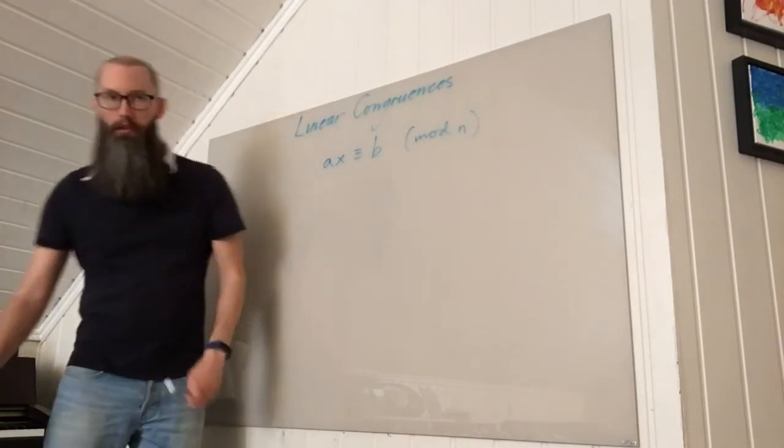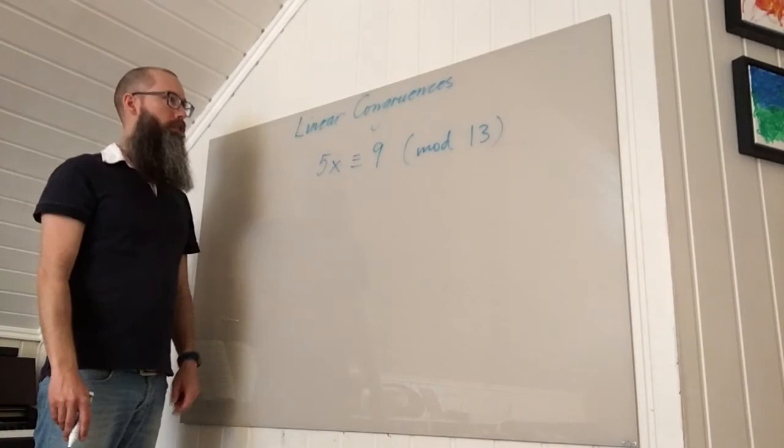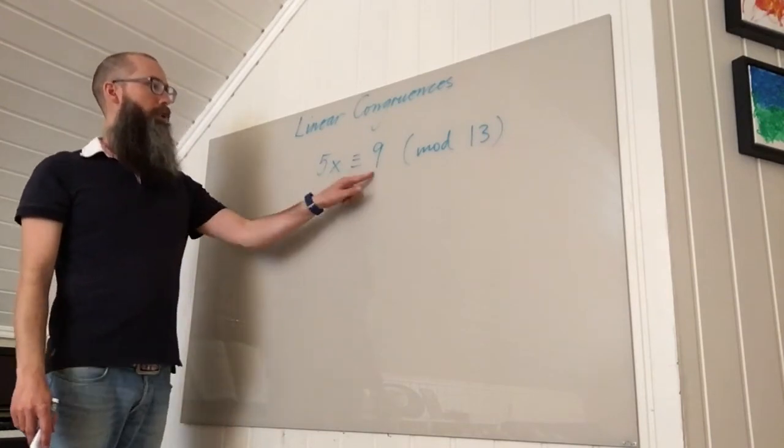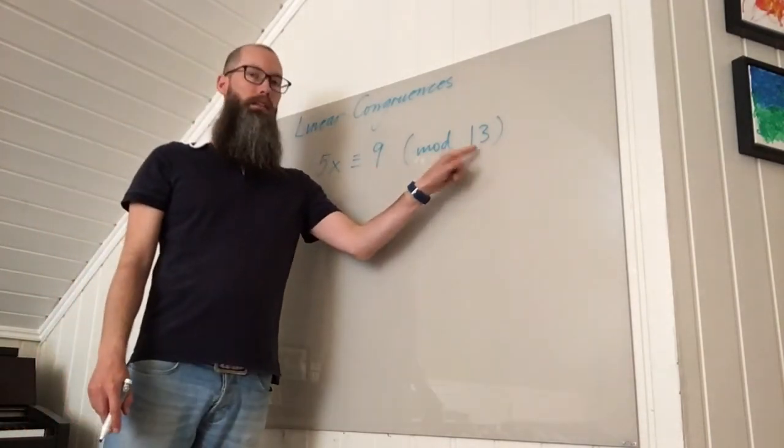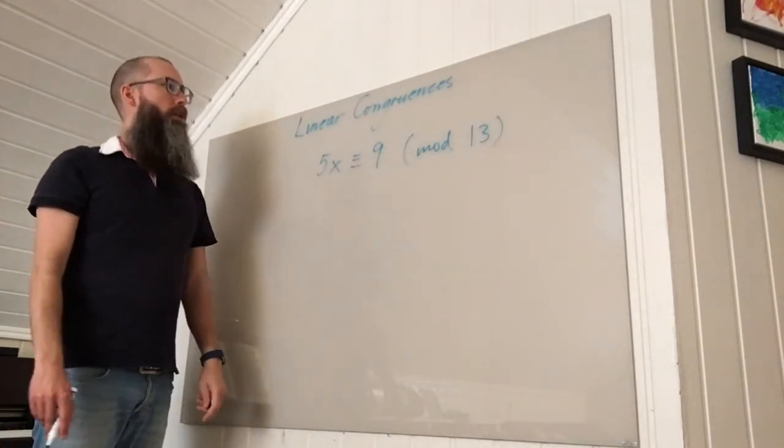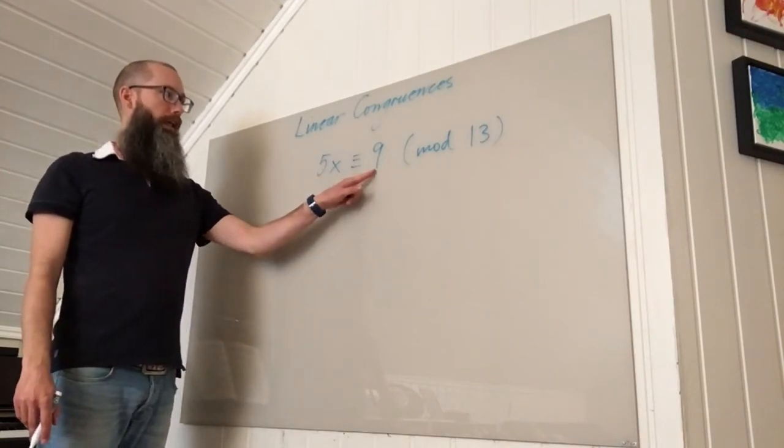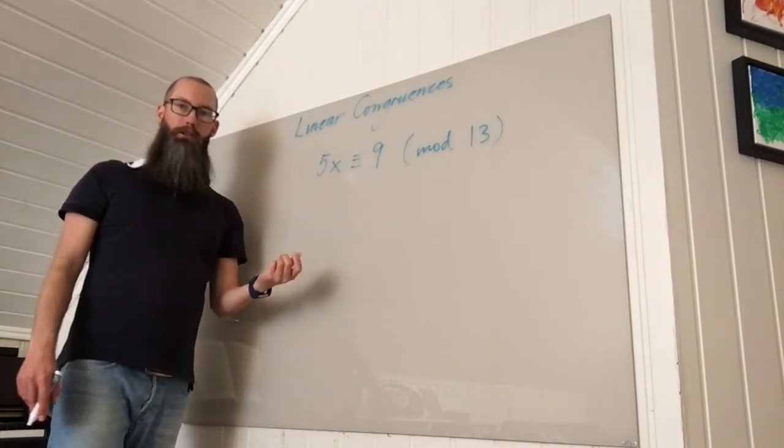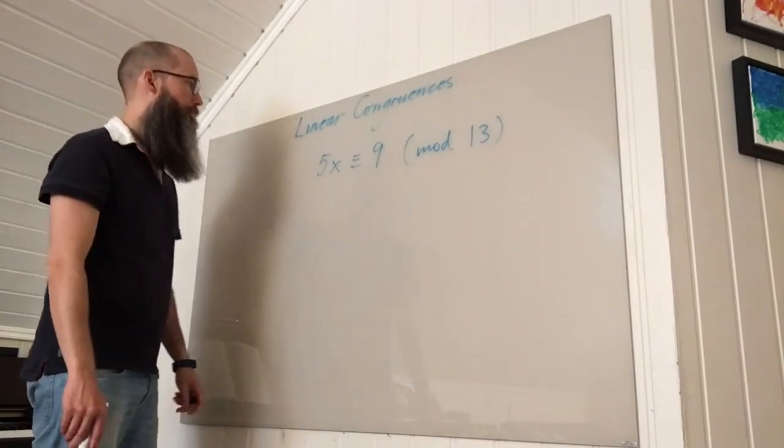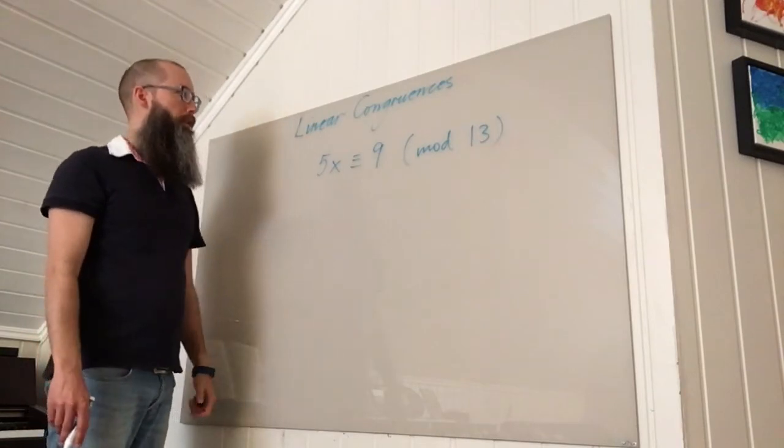Now let's look at this congruence. a is 5, b is 9, and n is 13. So 5 and 13 are coprime—that means the greatest common divisor is 1 and obviously divides 9, so we have solutions. We just have to find them. Now there are no common factors of these three, no common factors of these two either, so I have to try something else.